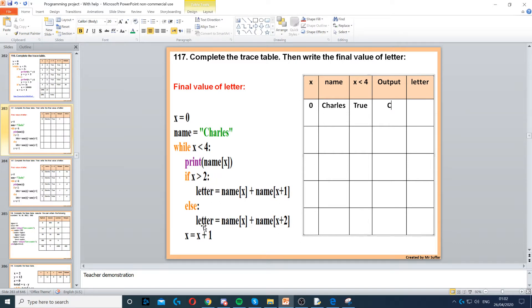So go to the else. Else, letter equals name X, which was already C, capital C, plus name X plus 2. So X plus 2, that's 0 plus 2, that's 2. And position 2 is the letter A, because remember we start from 0. If the C is 0, H is 1, A is 2. X is equal to X plus 1, now X becomes 1.